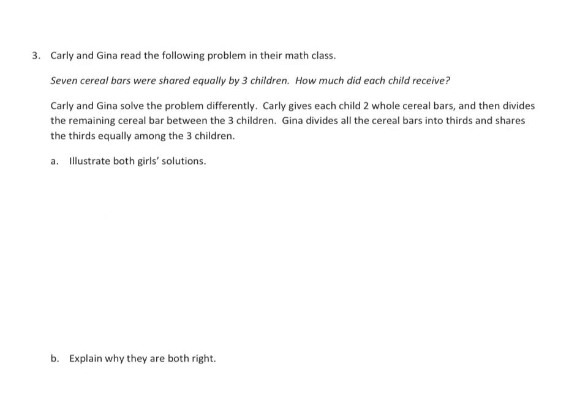Now I did the previous problem two ways in anticipation for this one. So it says, Carly and Gina read the following problem in their math class. Seven cereal bars were shared equally by three children. How much did each child receive? Carly and Gina solved the problem differently. Carly gives each child two whole cereal bars, then divides the remaining cereal bars between the three children. Gina divides all the cereal bars into thirds and shares the thirds equally among the three children. Illustrate both girls' solutions. So in either case, we have seven cereal bars. So we'll make seven rectangles.